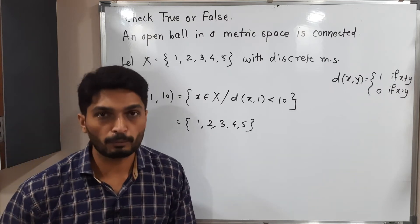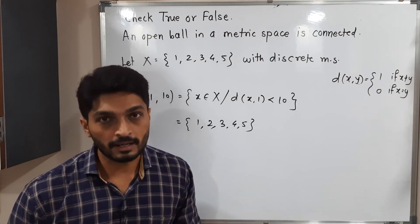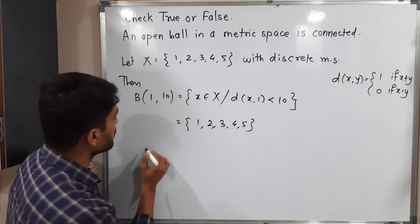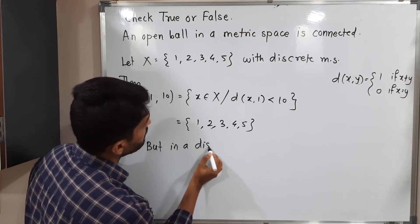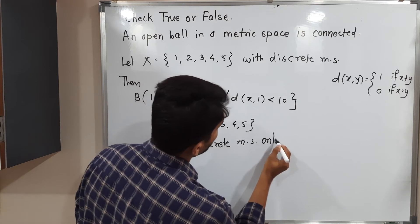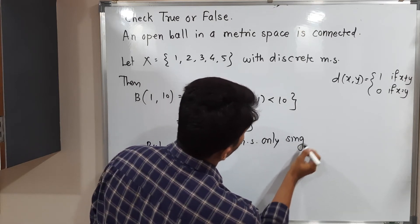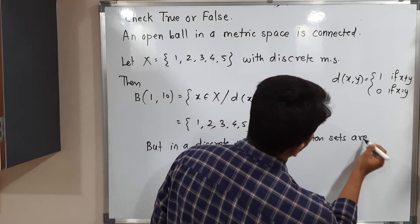But you know that in a discrete metric only singleton sets are connected. So let me write that thing. But in a discrete metric space only singleton sets are connected. Singleton sets are connected.